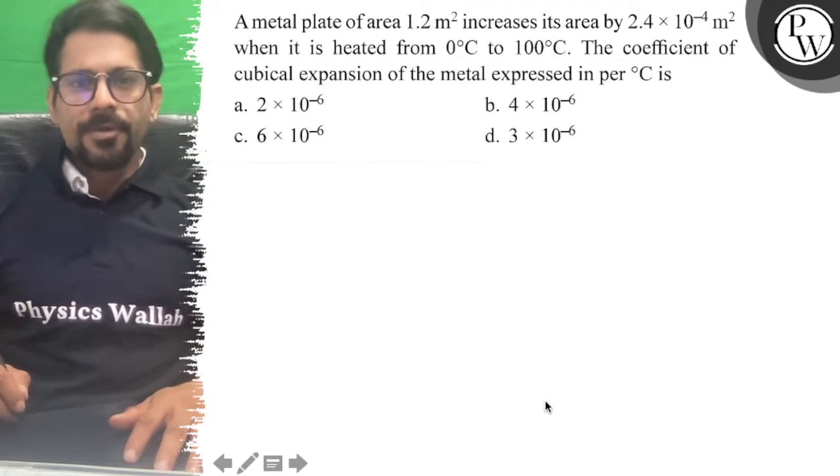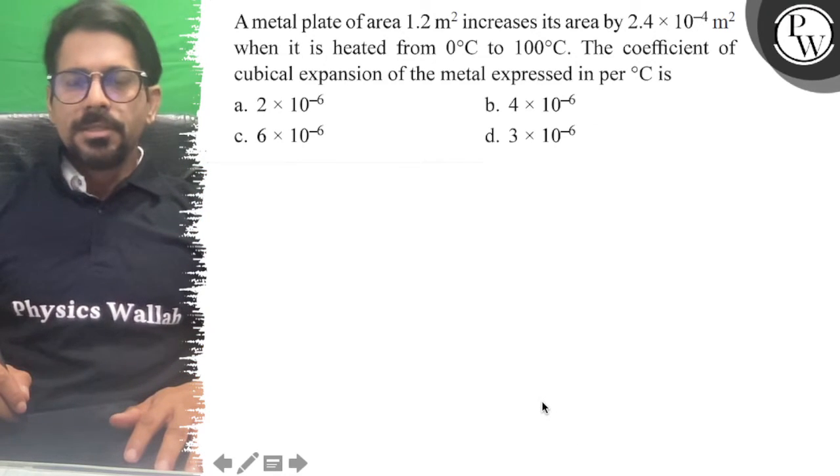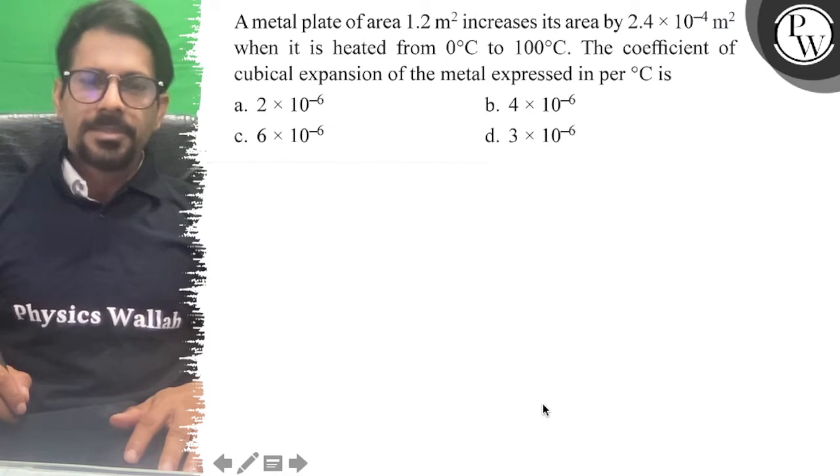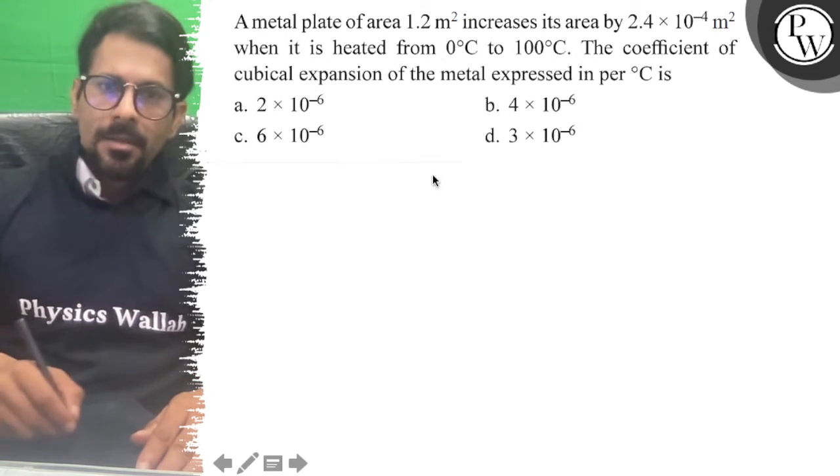Hello guys, here's the question. A metal plate of area 1.2 meter square increases its area by 2.4×10⁻⁴ meter square when it is heated from 0 to 100 degrees Celsius. Find the coefficient of cubical expansion of the metal expressed in per degree Celsius.